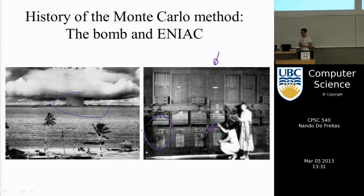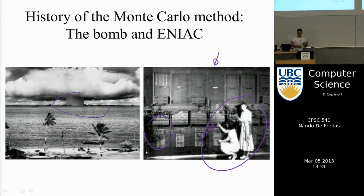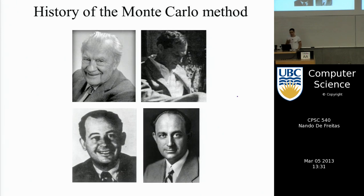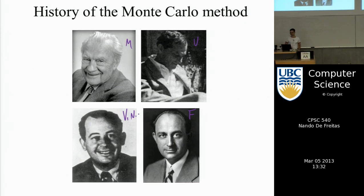The people who worked on Monte Carlo initially were physicists: Metropolis, Ulam — a famous Polish mathematician — Enrico Fermi from Italy, and von Neumann, one of the fathers of computer science, game theory, and quantum mechanics notation.